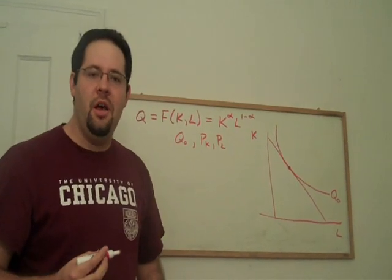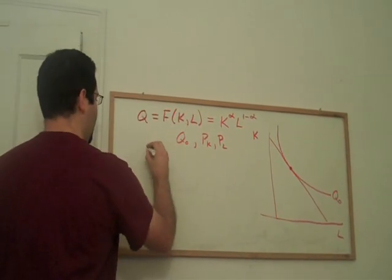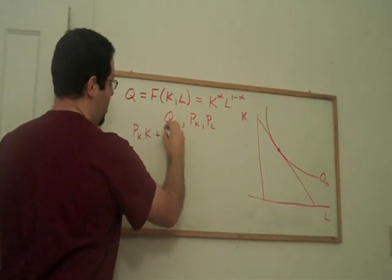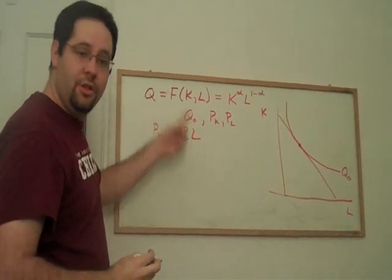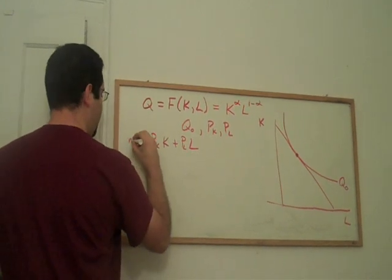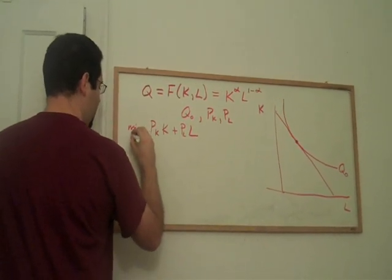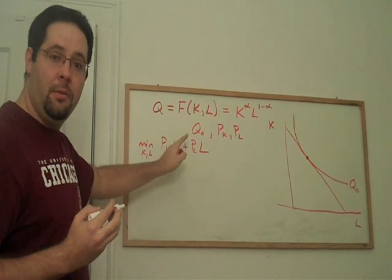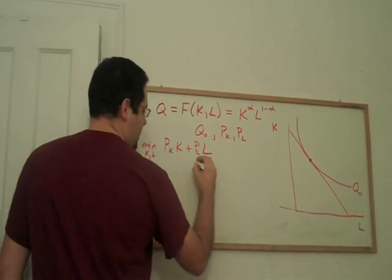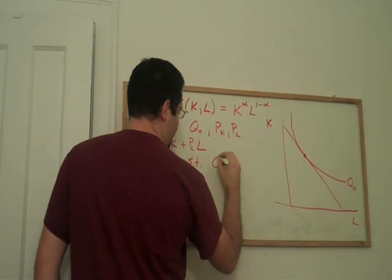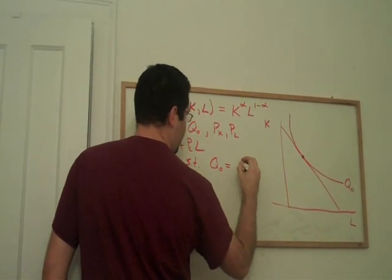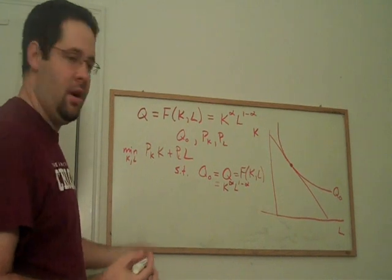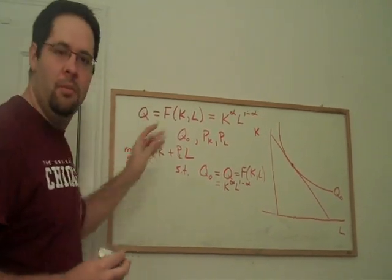So, let's write out an expression for expenditures. It's just price of capital times capital. That's how much you spend on capital. Price of labor times labor. That is your total expenditures. This is what we're going to try to minimize. And this firm can control how much capital and how much labor they actually use. They take price of capital, price of labor as given. And they're going to minimize this subject to producing Q equal to K to the alpha L to the 1 minus alpha. And so, there is our minimization problem. And that is the problem that we hope to solve.